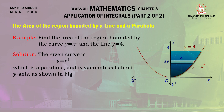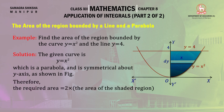We need to find the area of the region bounded by the curve and the line y equal to 4. The parabola is symmetrical about the y-axis, so the total area consists of two equal parts. Therefore, the required area is equal to two times the area of the shaded region. We use horizontal strips along the y-axis.